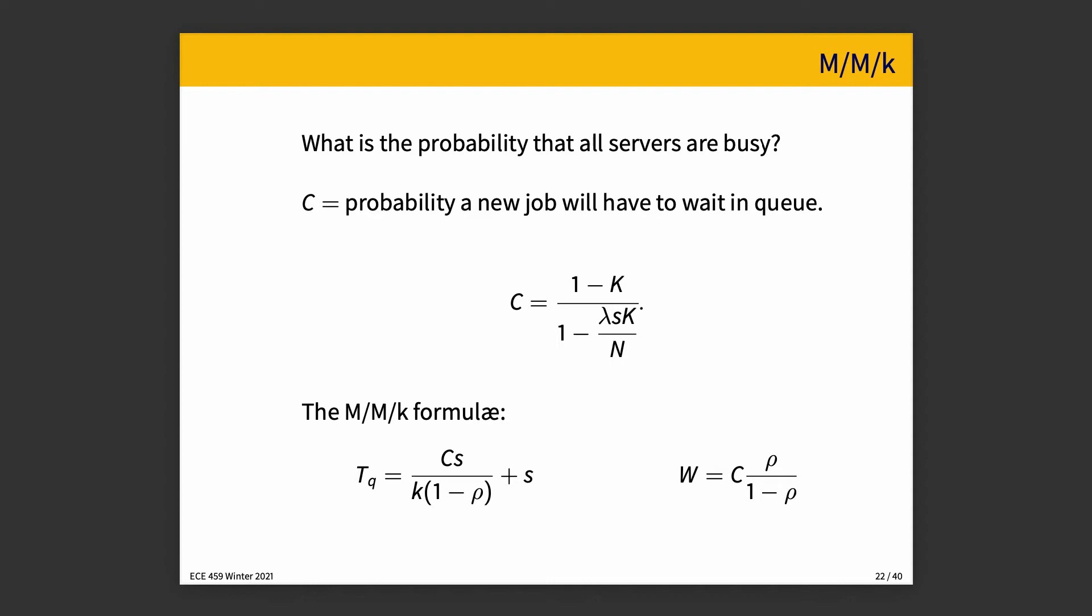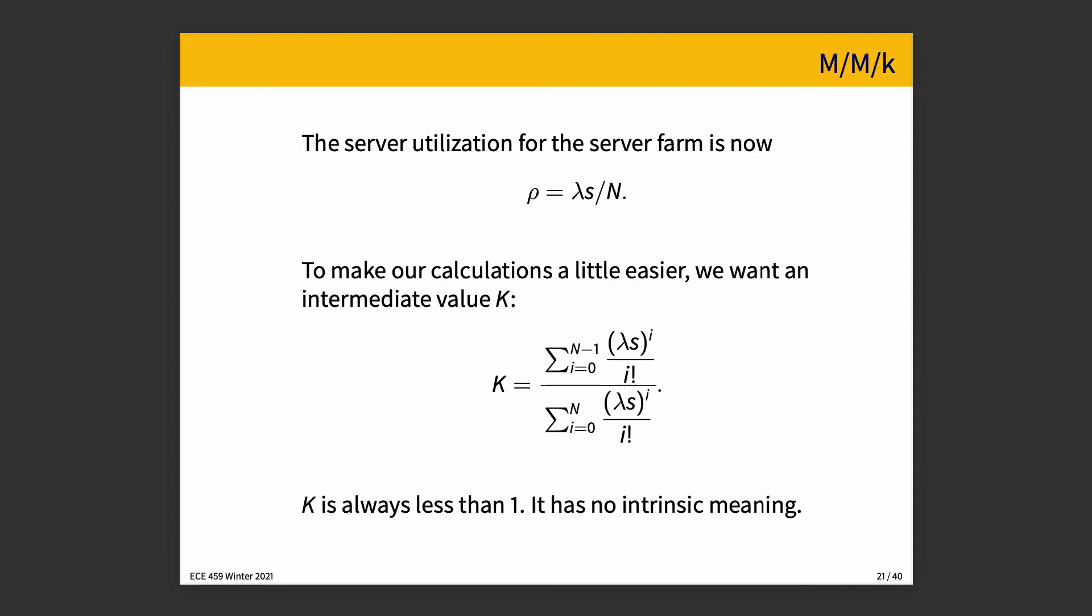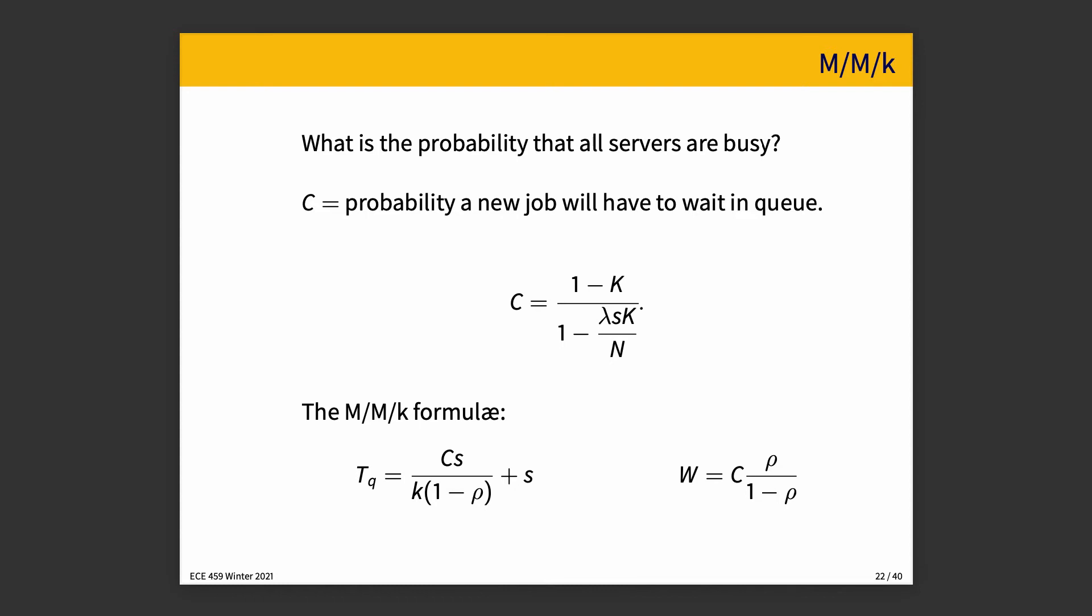So for TQ, the average time in the queue, is if I break it down into its two components, the amount of time we have to wait plus the service time. And the amount of time that we have to wait is C times the service time divided by K times one minus rho. And W is the probability we have to wait times rho divided by one minus rho. So W, in this case, our average length of the queue, is well, the busier things are, the worse our situation gets. The chance we have to wait makes a difference.